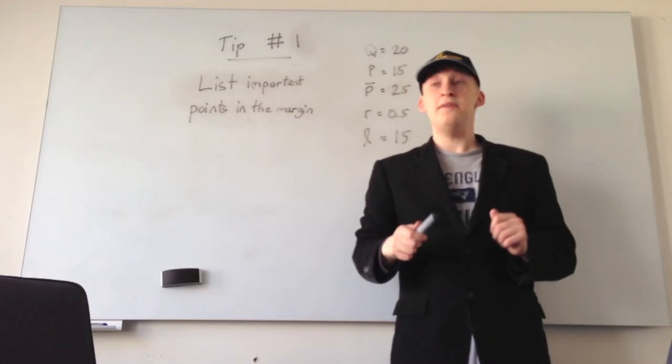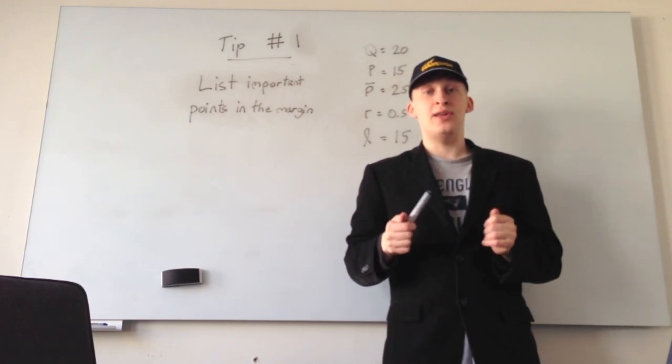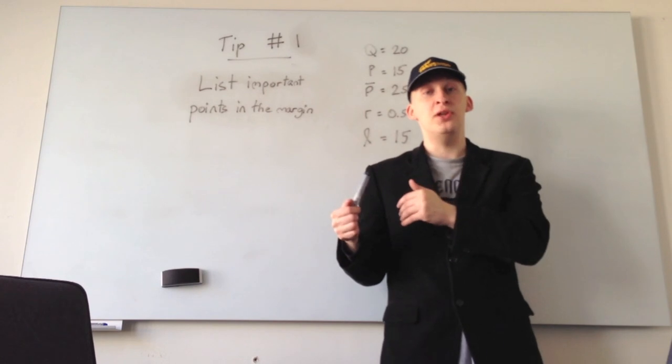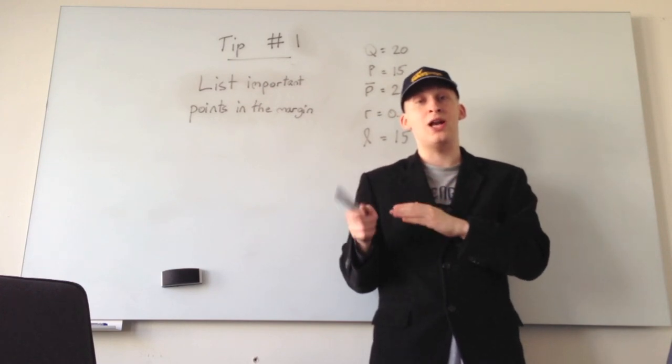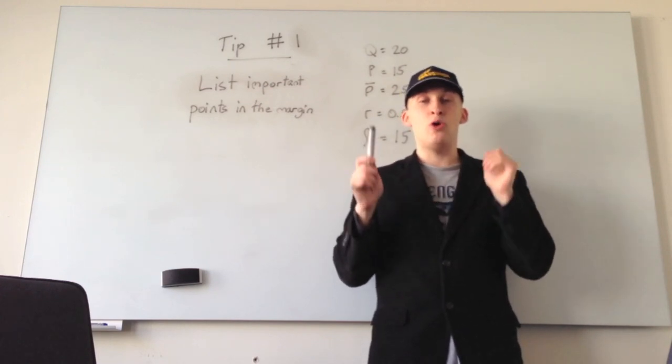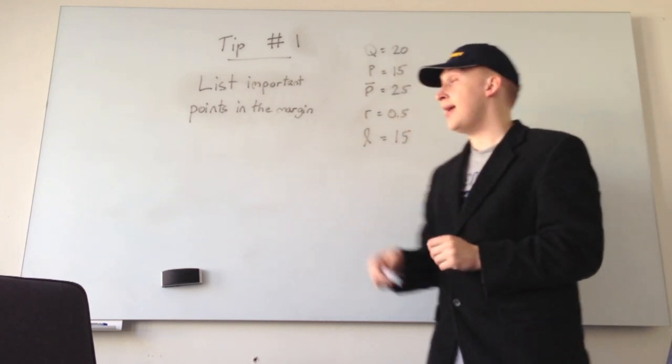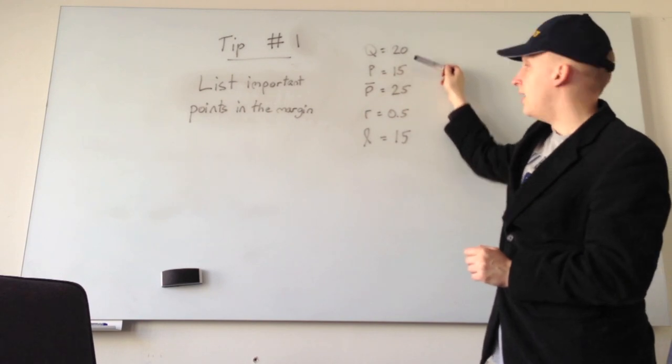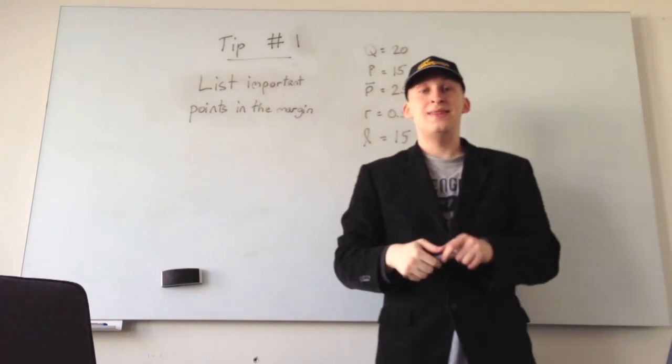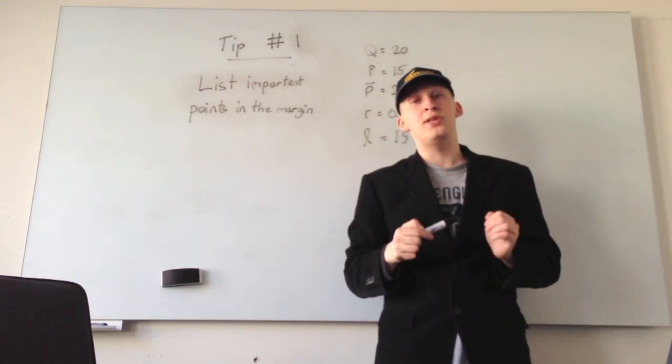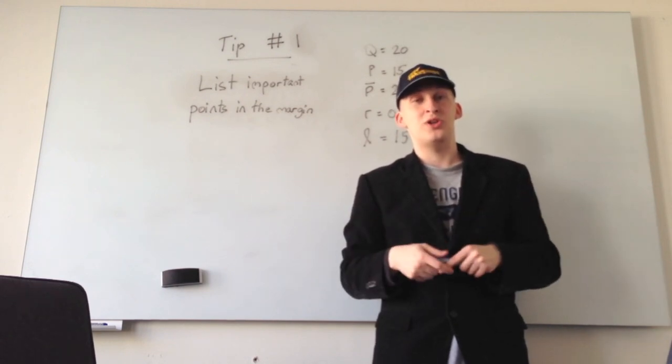So starting off, tip number one, list all important points in the margin. This is especially important if you have a calculation question with big lines of text that give you many values that you have to plug into an economic equation. Pick out what are the most important values that you must put in your equation on the very side of the page. For example, what is given quantity and given prices and given interest rates and so on. This will help you to not miss key points in your calculation questions or in any other word-based questions that you might have.